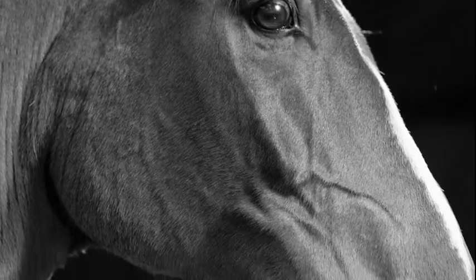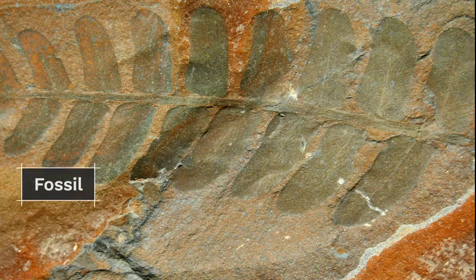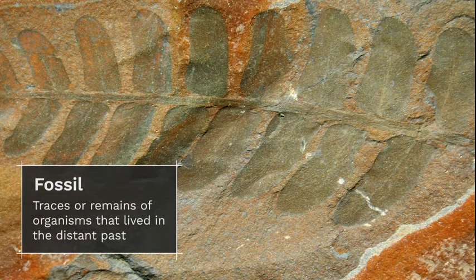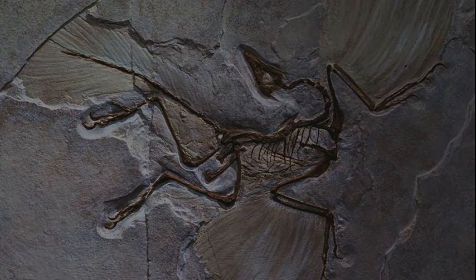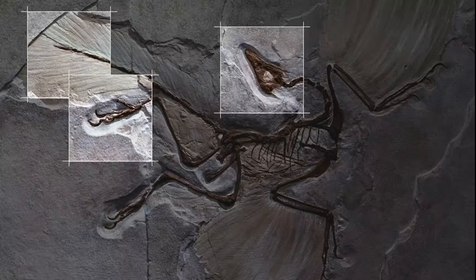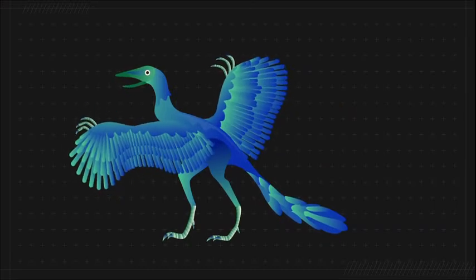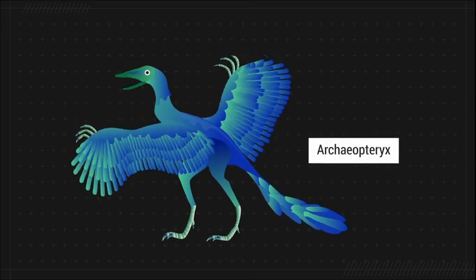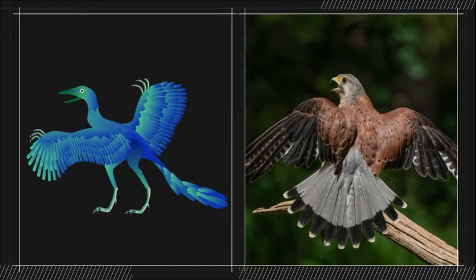We can't travel back in time to see what organisms on Earth used to look like. But we can learn a lot about the history of life on Earth by looking at fossils. Fossils are the traces or remains of organisms that lived in the distant past. You might have observed this dinosaur fossil's pointed snout, long claws, or tail bones. You might have even spotted the indentations of the organism's feathers — this dinosaur had wings. The fossil shows that millions of years ago, small dinosaurs had feathers, just like modern birds. This is one clue about the history of birds.